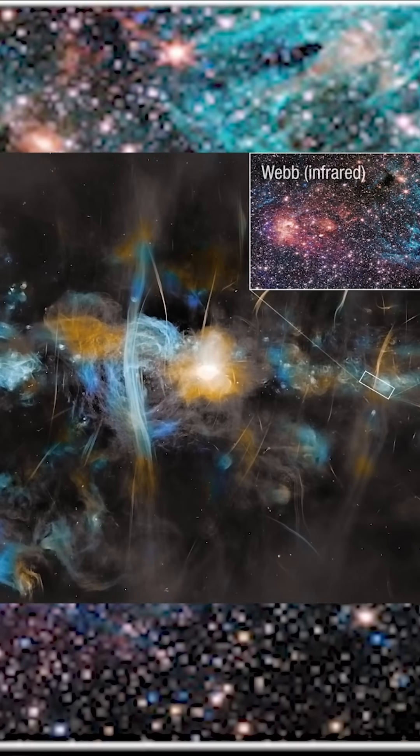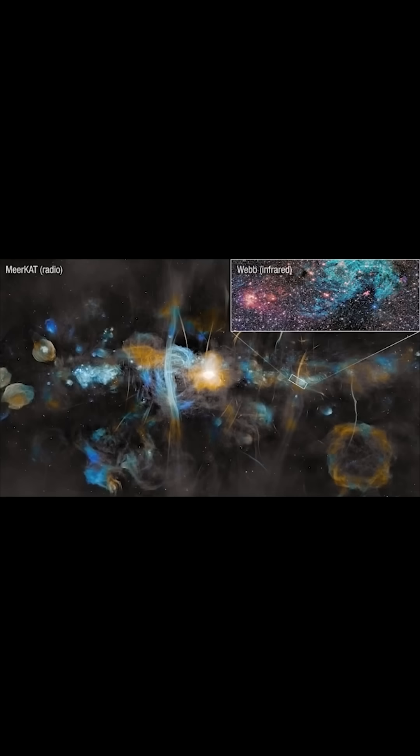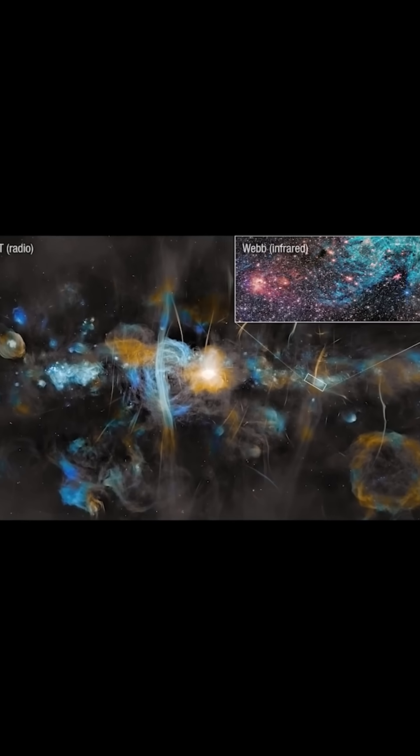This image spans 1,000 light years, while the Webb image covers only 44 light years. At the center of the image, the region surrounding the Milky Way's supermassive black hole blazes bright.